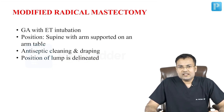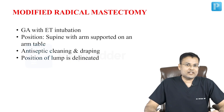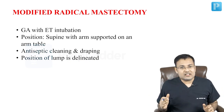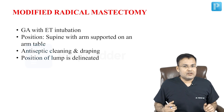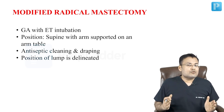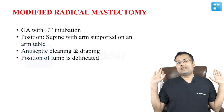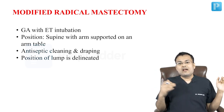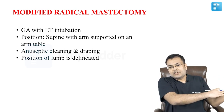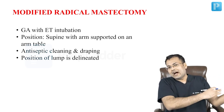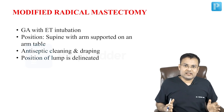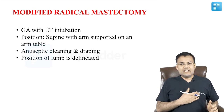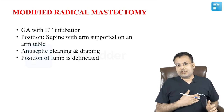First, what kind of anesthesia is given for modified radical mastectomy? It is performed under general anesthesia with endotracheal intubation. The patient is lying supine and the arm is supported on an arm table. Antiseptic cleaning and dressing is done and we have to delineate the position of the lung.